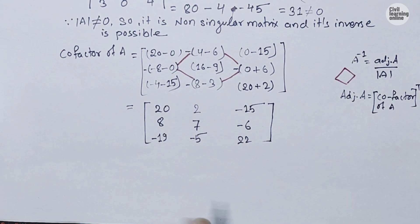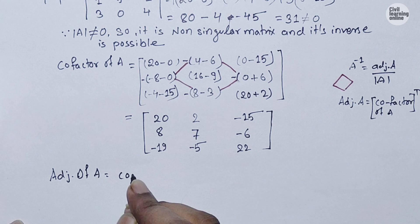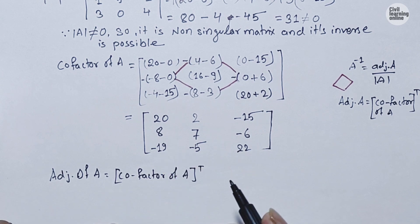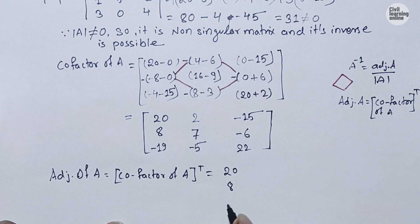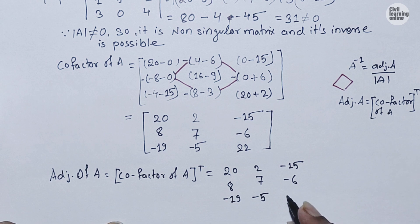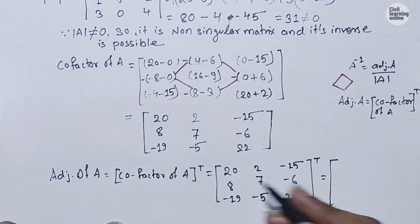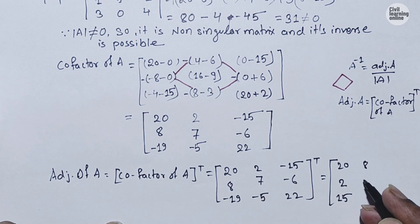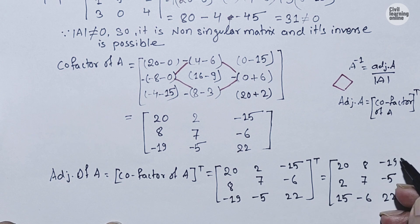The adjoint of A is simply the transpose of the cofactor matrix — we interchange rows and columns. The first row becomes the first column, the second row becomes the second column, and the third row becomes the third column. So adj(A) = [20, −8, −19 / 2, 7, −5 / −15, 6, 22].